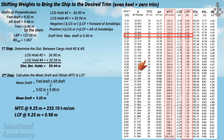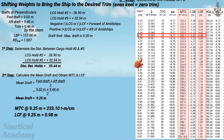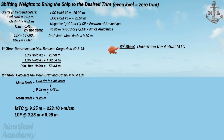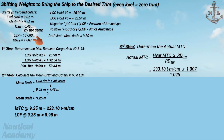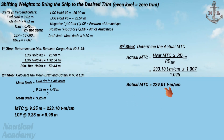Since this hydrostatic table was developed when the ship was floating in salt water, our next step is to determine the actual MTC value, because our ship is presently floating in dock water. The actual MTC equals the hydrostatic MTC multiplied by the relative density of dock water divided by the relative density of salt water. The actual MTC is 229.01 ton meters per centimeter.